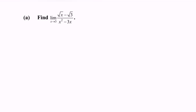First, what we have to do is substitute the value 3. We will have square root of 3 minus square root of 3, and we obtain 0 over 3 squared, which is 9 minus 9, giving us 0 over 0 — the indeterminate form, or IDF.